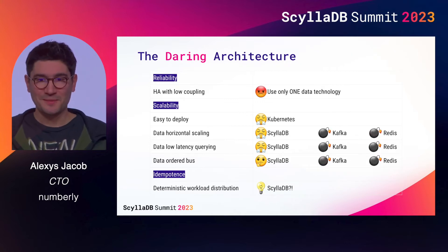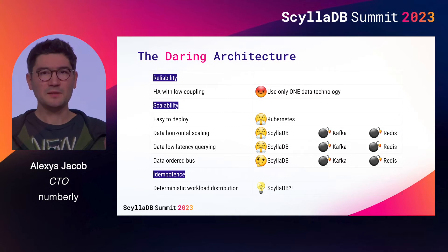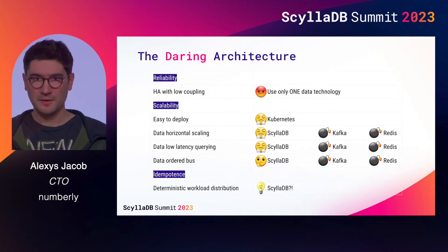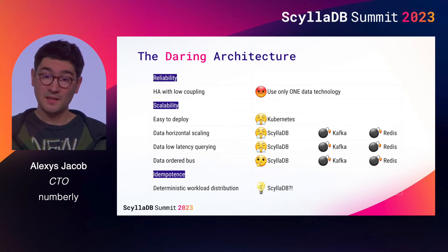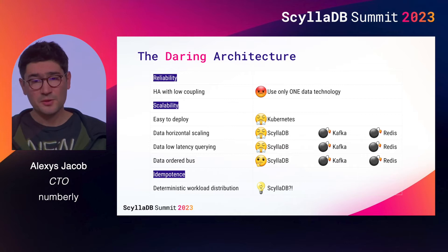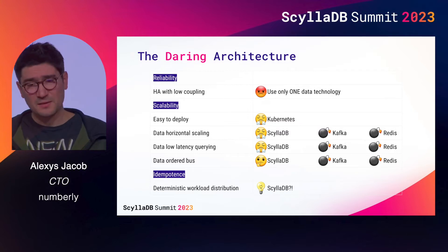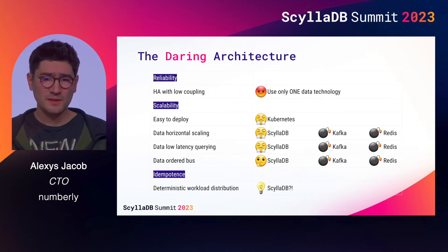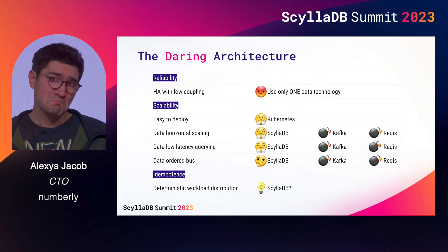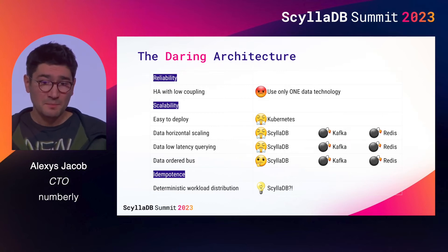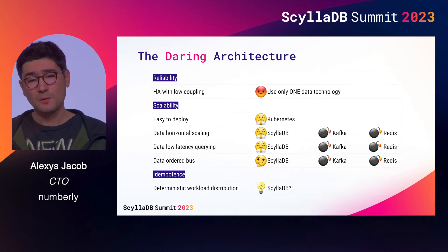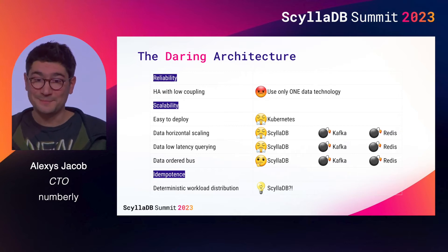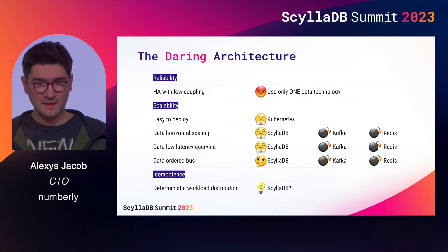So we decided to be bold and make a big statement: we'll only use one data technology and hold everything together with it. Scylla was the best suited to face the challenge. It's highly available, it scales amazingly, and it offers ridiculously fast queries for both single and range queries — meaning it can also serve as a distributed cache, efficiently replacing Redis. Replacing Kafka as an ordered database is not so trivial using Scylla, but it seems doable. The biggest piece of the puzzle was how to get a deterministic workload distribution, ideally for free.